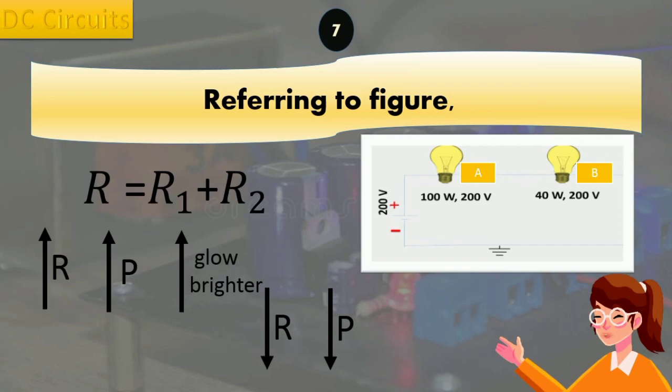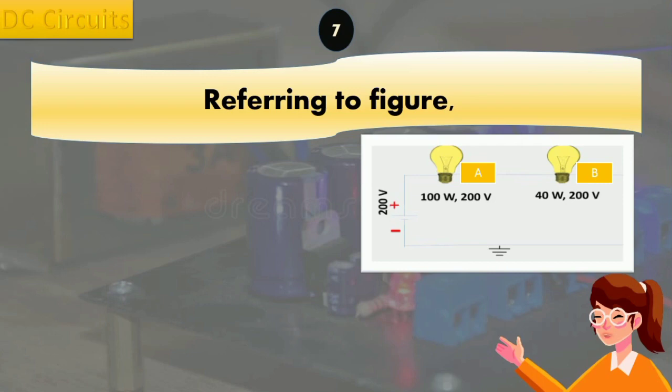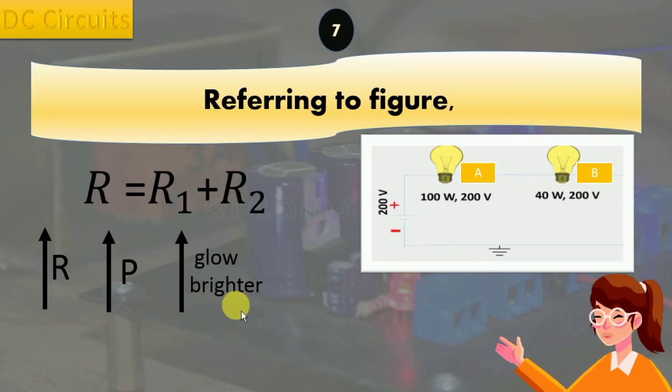So the answer to your question depends on the relative resistances of the two bulbs. If one bulb has a higher resistance it will glow brighter. If both bulbs have the same resistance, they will glow with the same brightness.